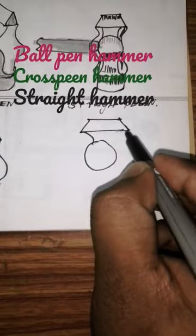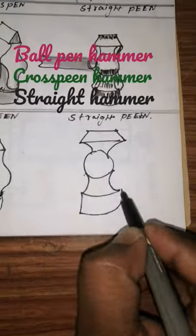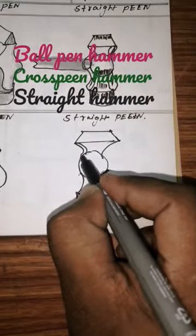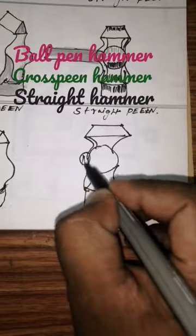Then join this one curve, join this curve. And draw one more curve like this, then the hole will come like this.